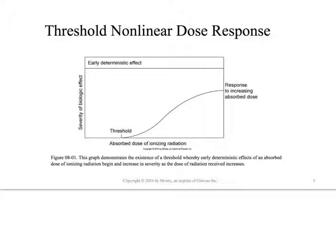Here's what that model looks like for early deterministic radiation effects. This model is the one we look to - there's a threshold indicated, and we only start to see the effect after we go past that threshold with our radiation dose. These are typically acute doses, but there's one exception to that, and it is cataracts. We'll talk more about cataracts in just a moment.